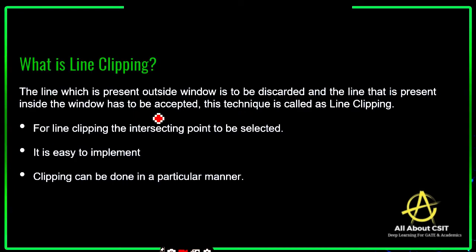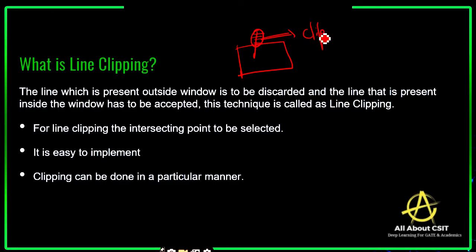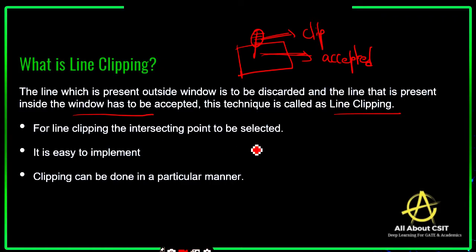So what is line clipping? The word itself says that we are trying to clip the line. The line that is present outside the window needs to be clipped, and the line that is present inside the window needs to be accepted. For line clipping, the intersection point needs to be selected — that is important. If you want to clip the line, we need to select the intersection point. Line clipping algorithm is easy to implement, and clipping can be done in any particular manner.